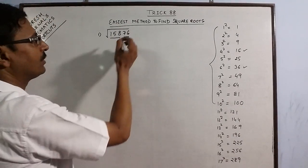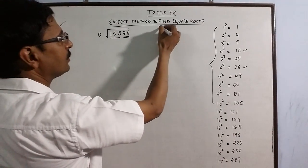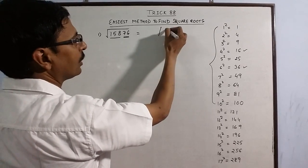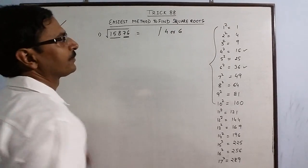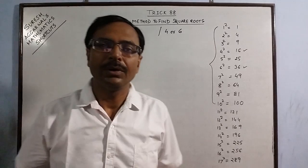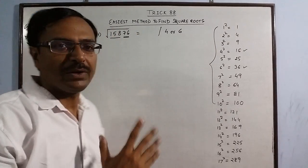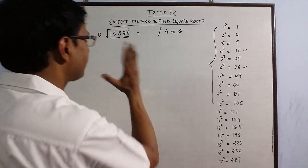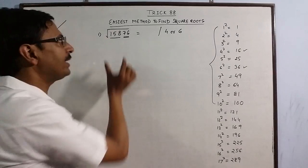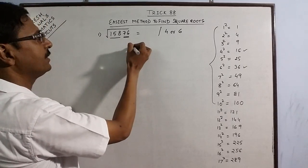So obviously your answer will end with 4 or 6. So we will find out what is the right answer between 4 or 6, the other part of the answer. Now you have the number as 158, the second part.